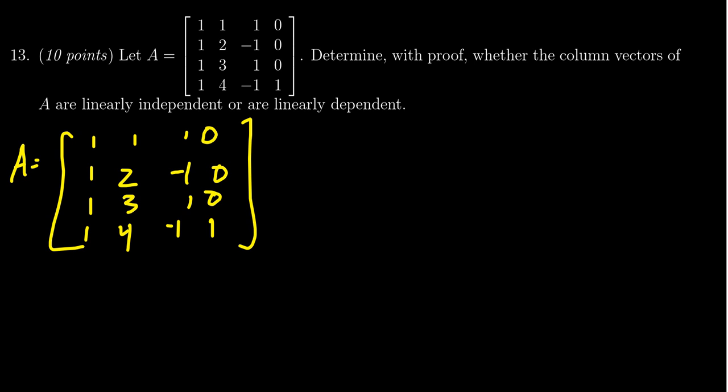We want to determine if there are pivots in each and every column of the matrix. If every column is a pivot column, the vectors will be linearly independent. We get our first pivot position in the 1,1 spot. We're going to compute R2 minus R1, R3 minus R1, and R4 minus R1.